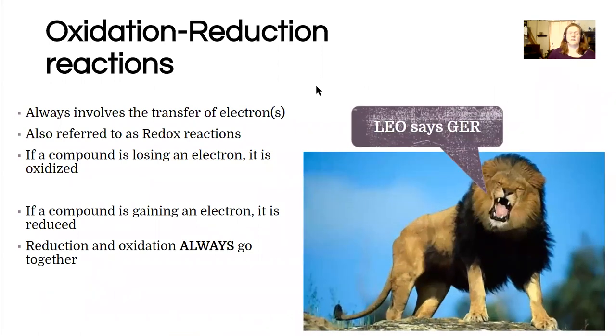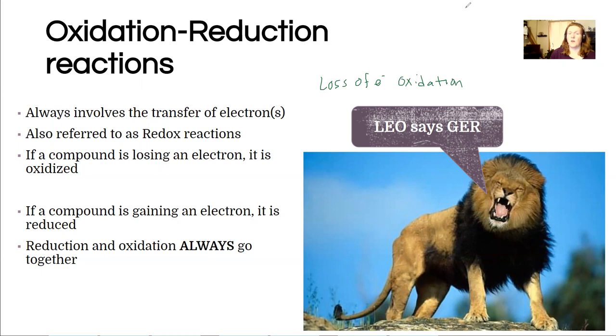So let's take a look at this example, kind of as a summary. I remember the pattern here with this phrase, Leo says GER. So it means loss of electrons is oxidation. And recall that oxidation happens when the charge goes up. And then GER stands for gain of electrons is reduction. And so we can tell something has gained electrons when the charge goes down. So that's the way I remember it. Leo says GER. So I have this picture of a lion in my brain and I have to sort of connect it with what's happening in the reaction. They always exist together. You can't have a reduction without an oxidation and vice versa. So that's an important concept here.